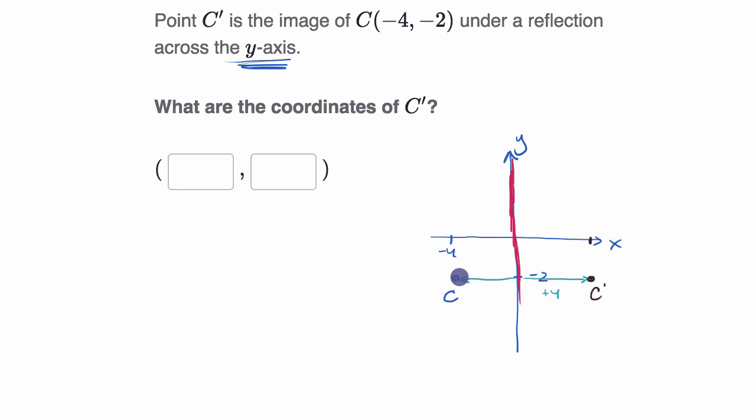And what would its coordinates be? Well, it would have the same y-coordinate. So C prime would have a y-coordinate of negative two. But what would its x-coordinate be? Well, instead of it being negative four, it gets flipped over the y-axis. So now it's going to have an x-coordinate of positive four. So the coordinates here would be four comma negative two.